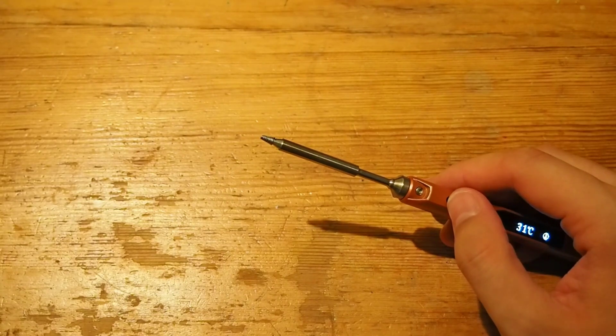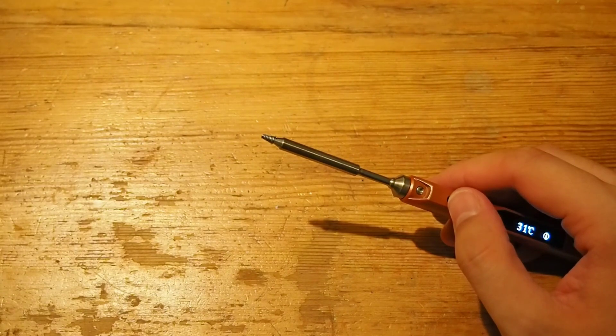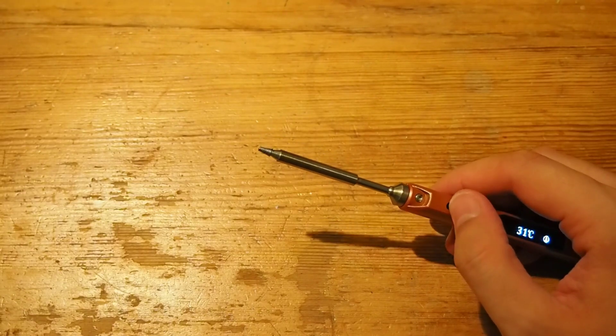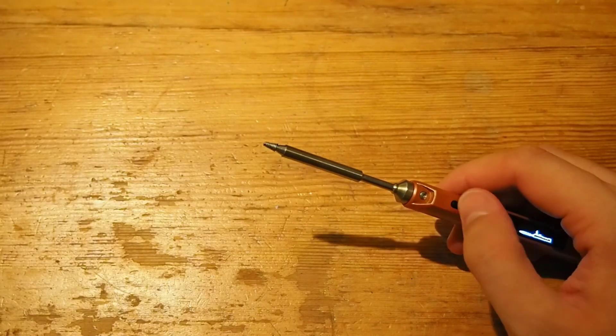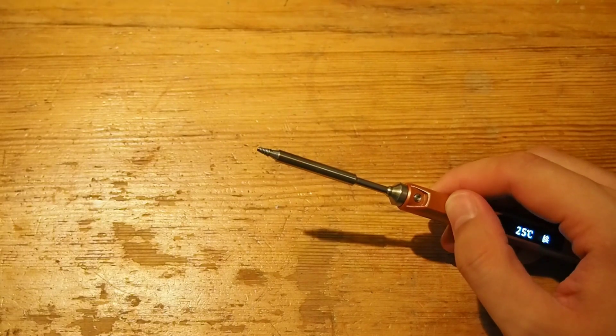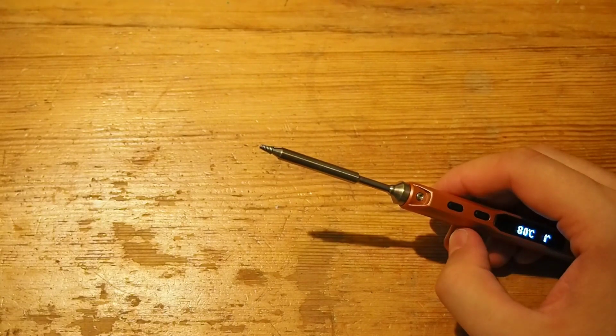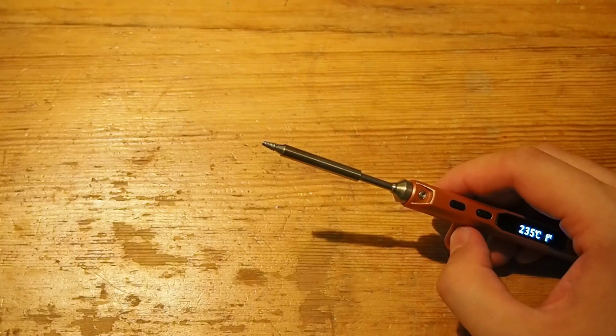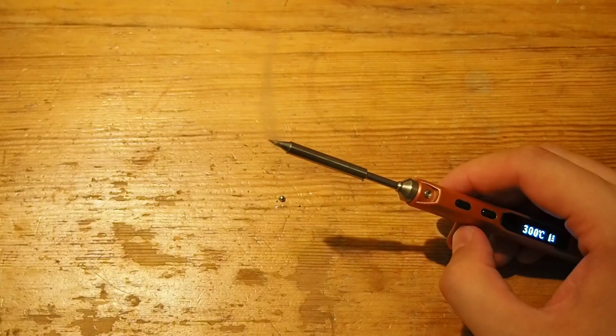Here is just a video showing how fast it will heat up and melt this 60-40 soldering with rosin core that I have placed on the tip. Starting it now. The temperature is rising steadily. And there it started to melt.